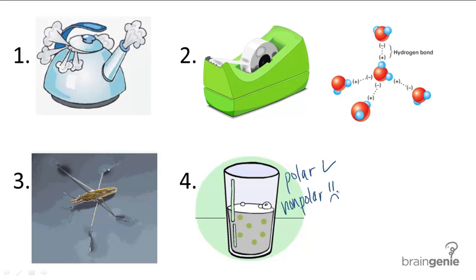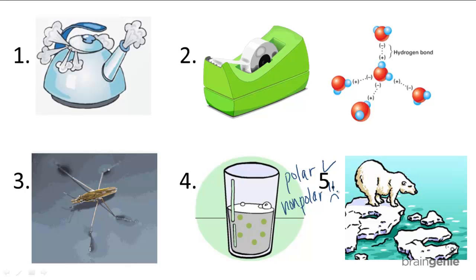The last property of water is that the liquid form of water is denser than the solid form of water. This is very unique and very handy. This happens because hydrogen bonds are a particular length. When water is liquid, these hydrogen bonds are pretty loose.